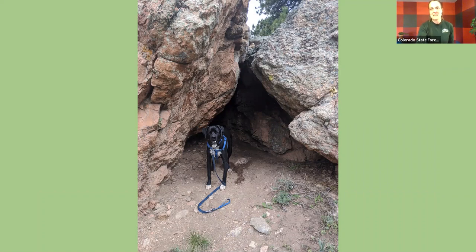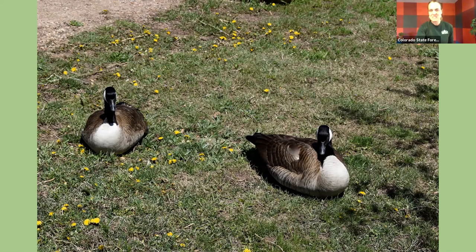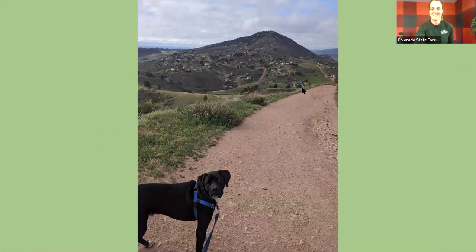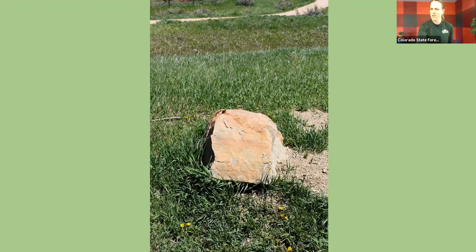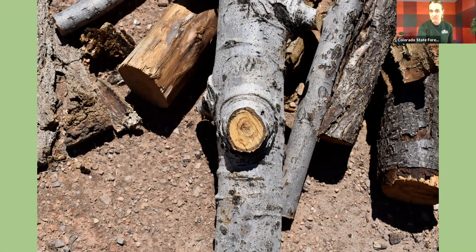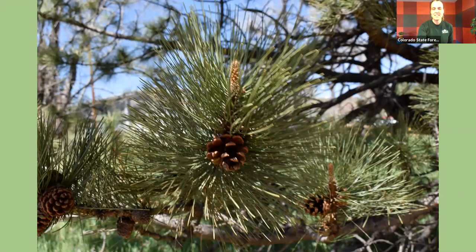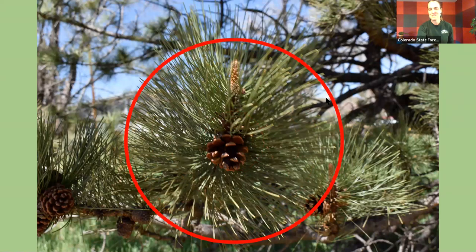Here's a really cool cave I found when I was taking my dog for a walk — could you find the triangle? Even animals can help remind us of shapes. What shape is the body of this goose? Did you see the oval? How about the mountain back here? It reminded me of a triangle. And what do you think of this rock? Did you see the square? Here we have a spot where a tree branch was cut — did you find the circle? And these branches where we found a ponderosa pine cone — that also reminded me of the circle.